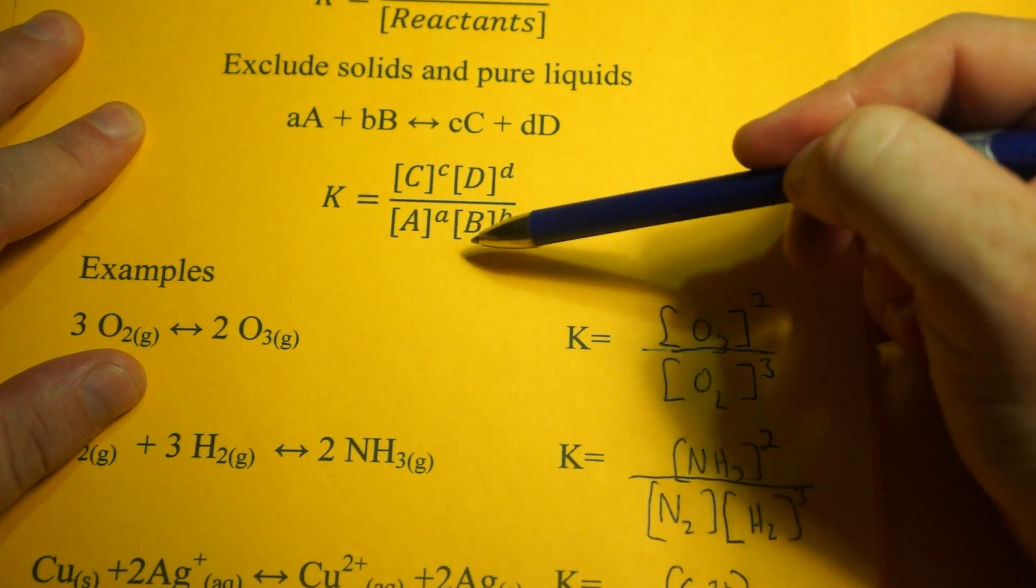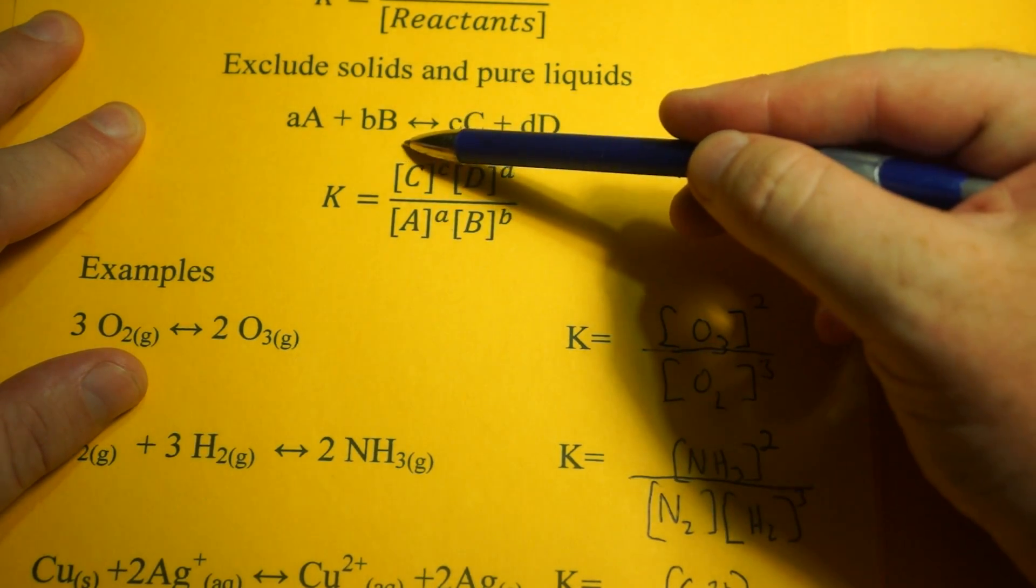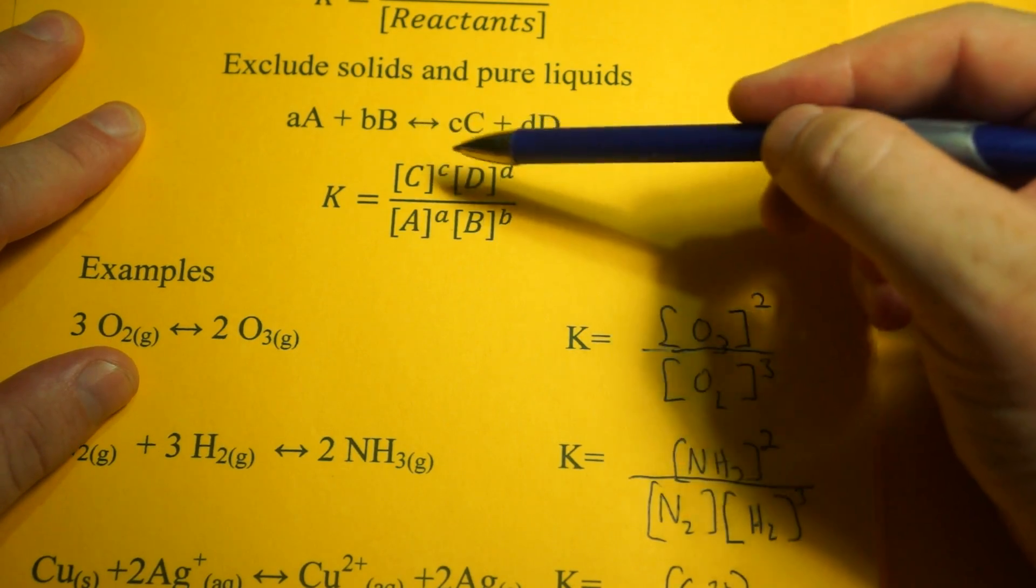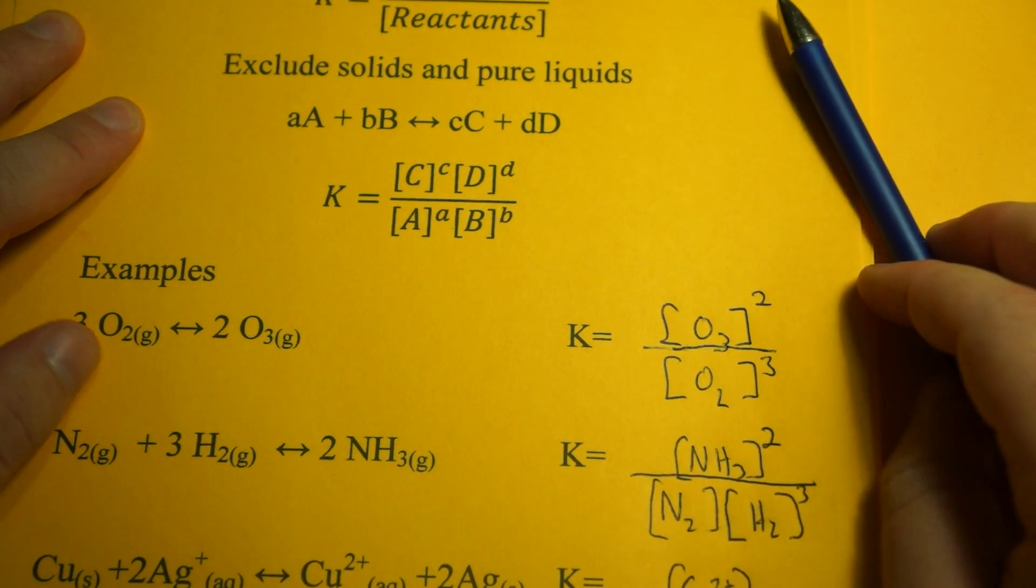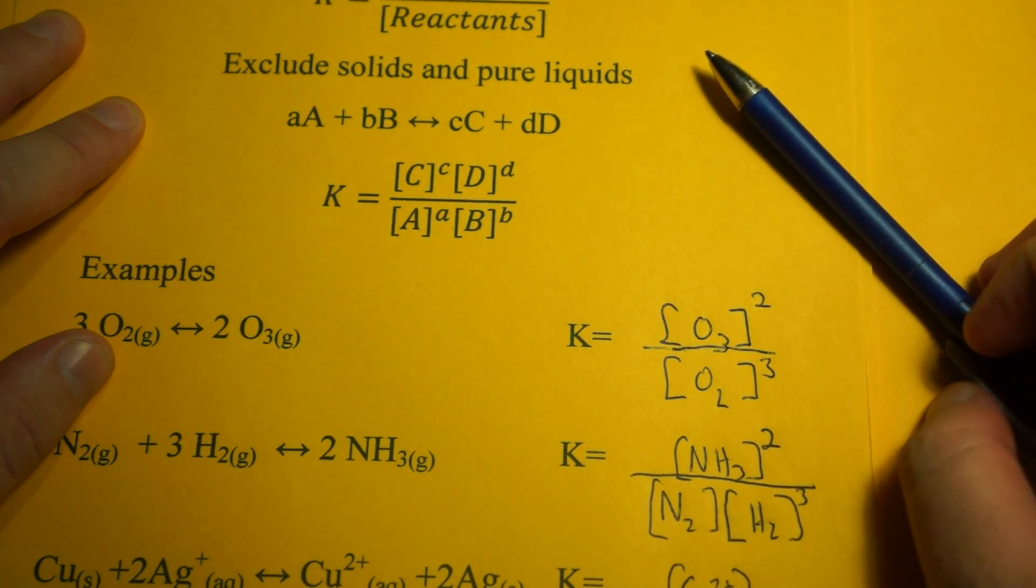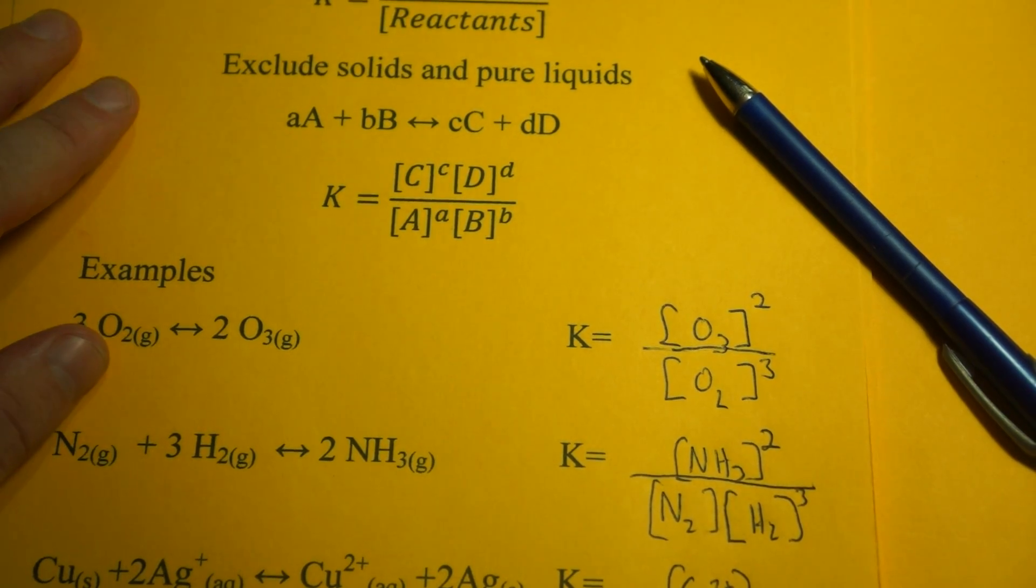If the number is less than one, we say it favors the reactants, or the equilibrium lies to the left. That's general—it also has to do with how the exponents are set up. But that's your equilibrium expression and how the constant works. Hope that helped.